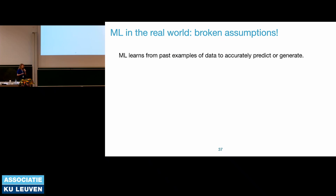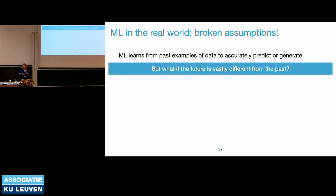The base assumption behind machine learning is that it learns from past examples and that should enable it to accurately predict the future. But in security, the future is vastly different from the past — you've just seen that with malicious domain registrations. Something that is true yesterday can very rapidly and dynamically change tomorrow. Machine learning doesn't give you inherent tools to deal with that. It's up to us as scientists and engineers to handle this issue.